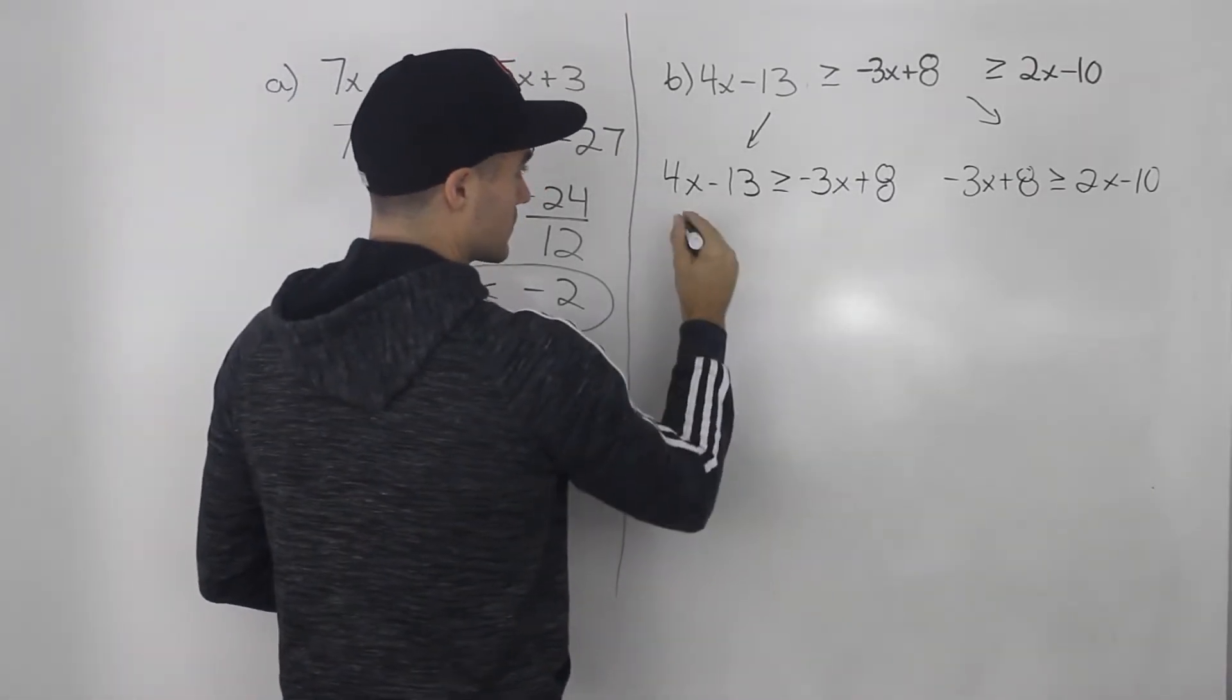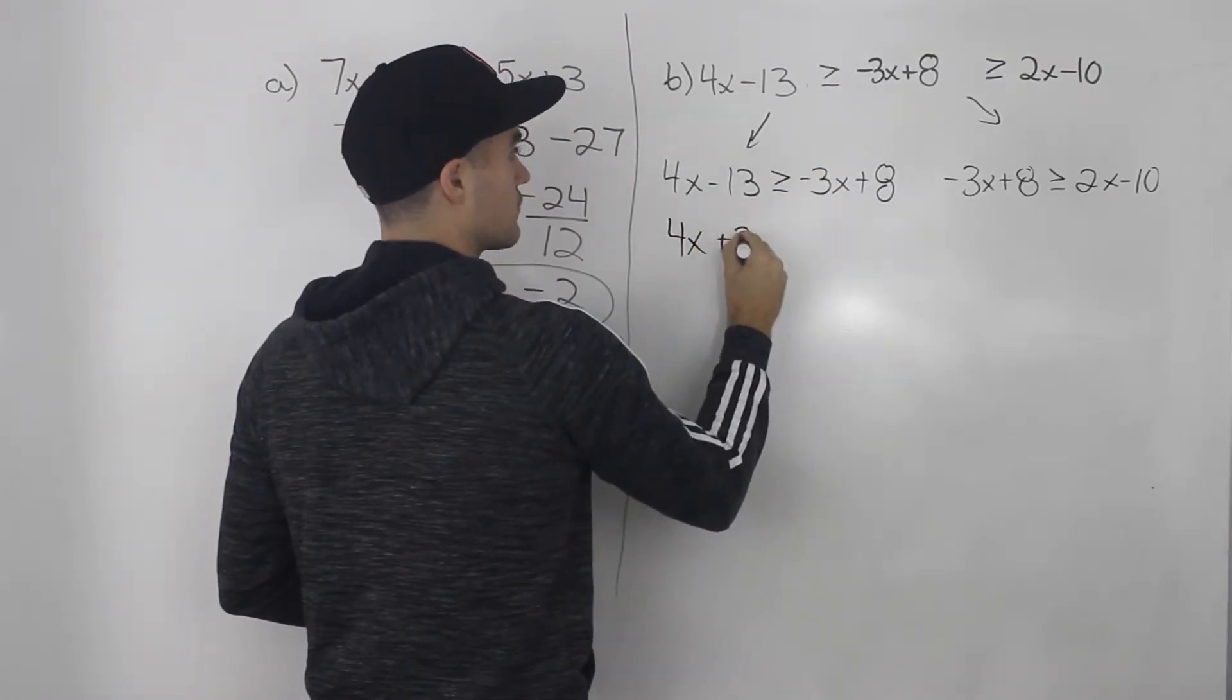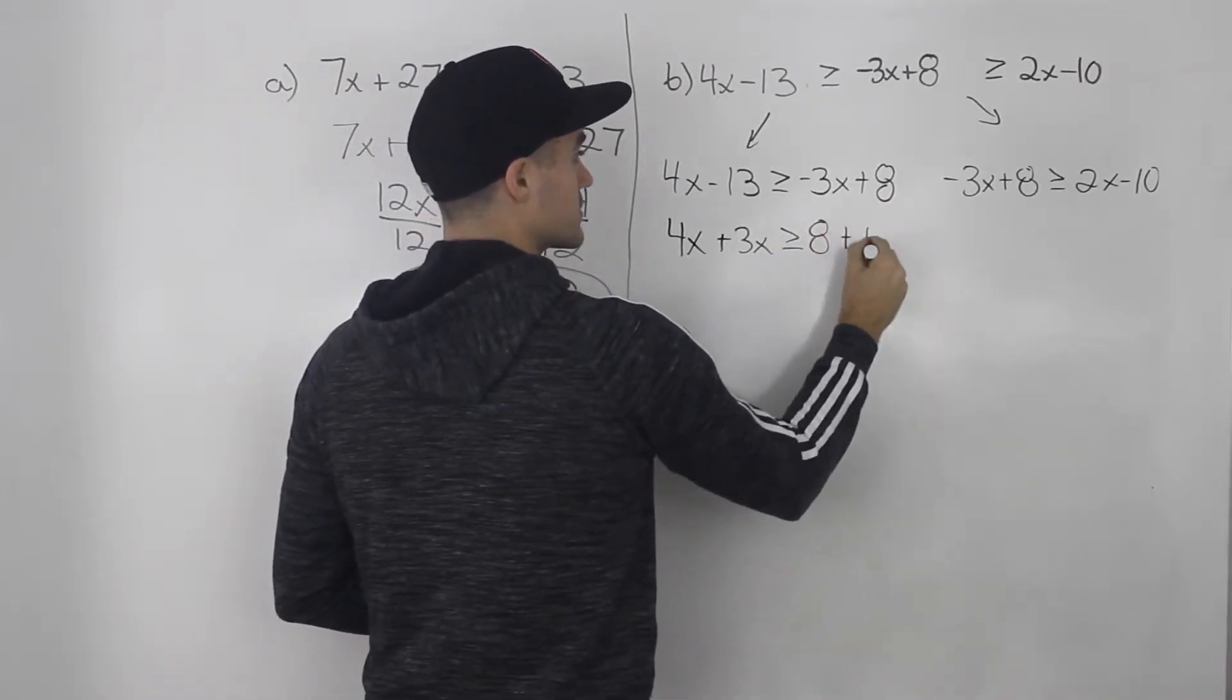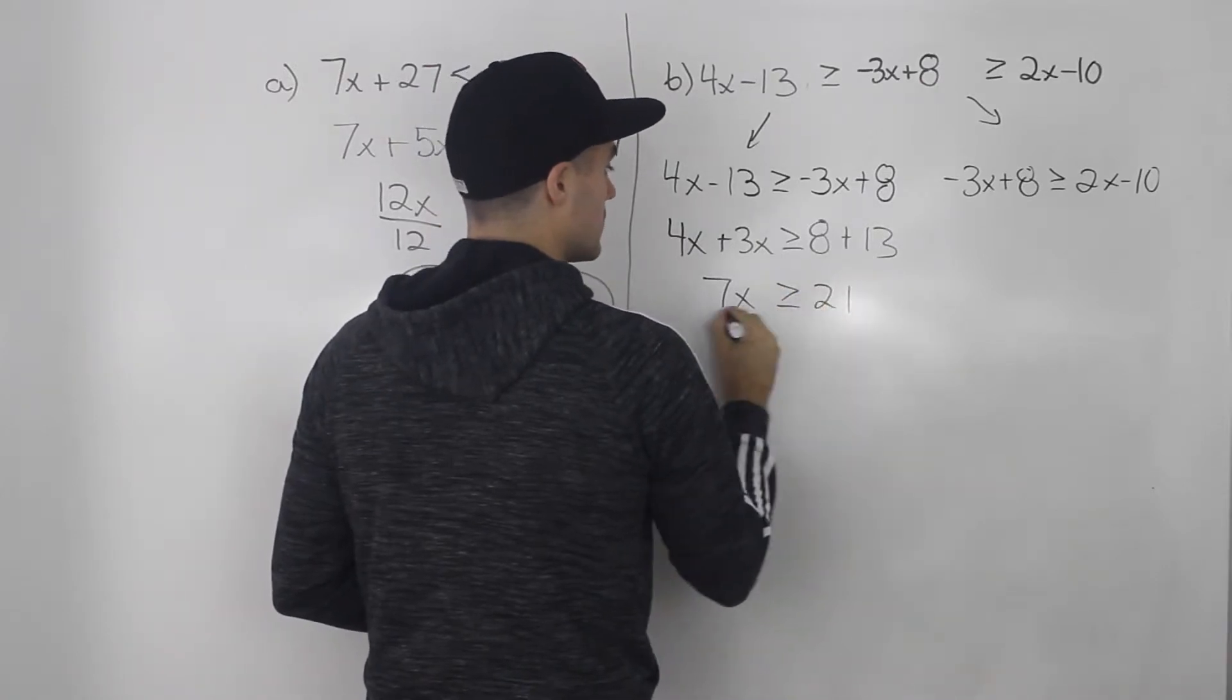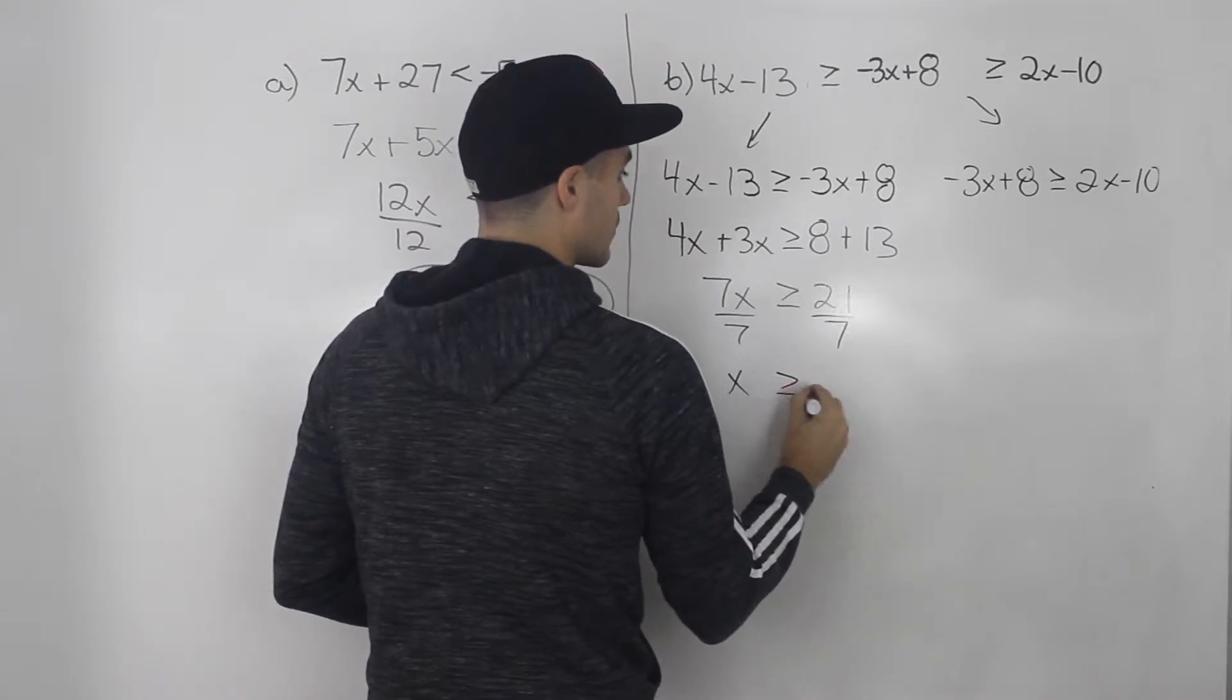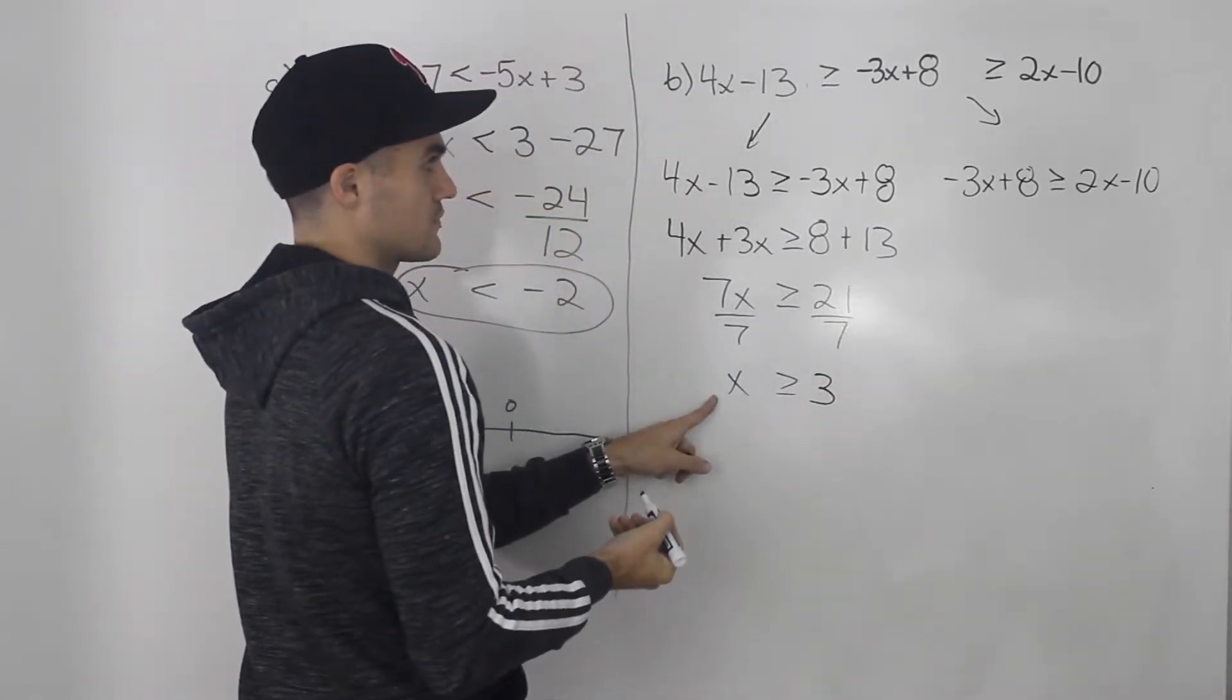So for this one, I'll bring this 3x over. So 4x, this negative 3x becomes positive 3x. Then I'll have 8 plus 13. So I'll have 7x is greater than or equal to 21. Divide both sides by 7. So x has to be greater than or equal to 3. So that's the solution for this part.